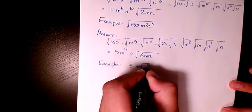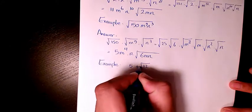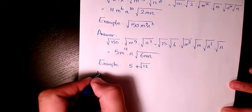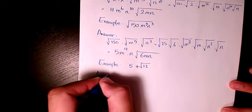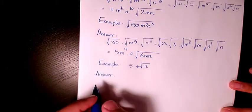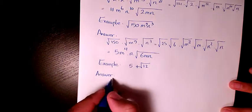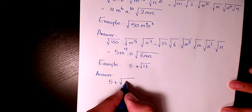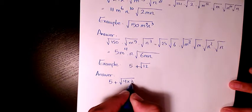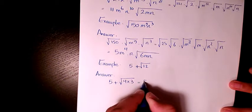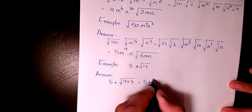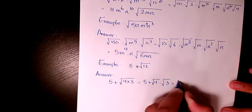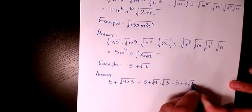Next, simplifying 5 plus the square root of 12. That's very simple: 12 is 4 times 3, so it's going to be 5 plus the square root of 4 times the square root of 3, which gives us 5 plus 2 root 3.